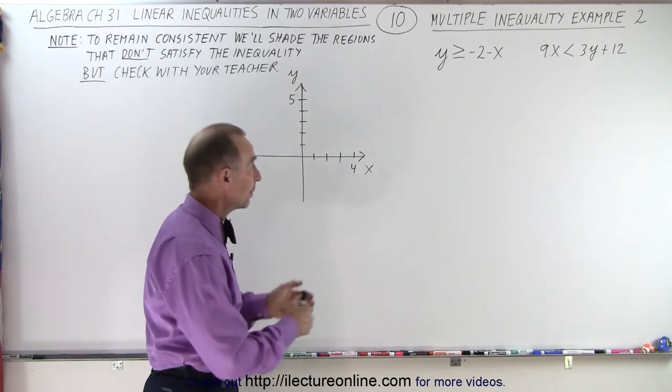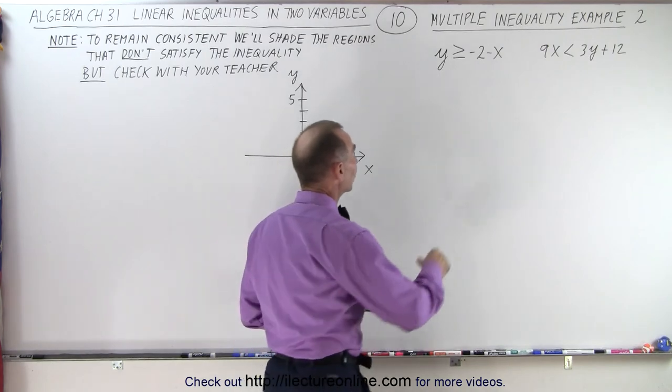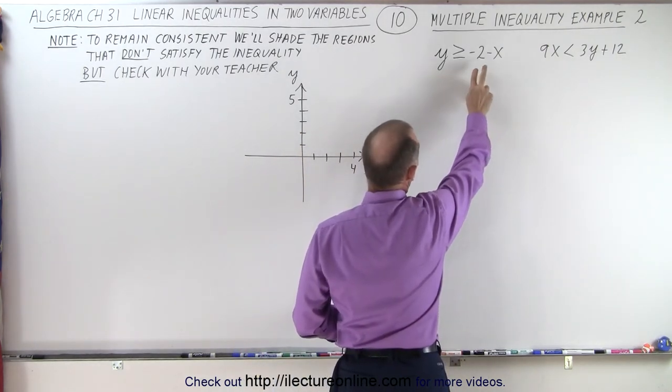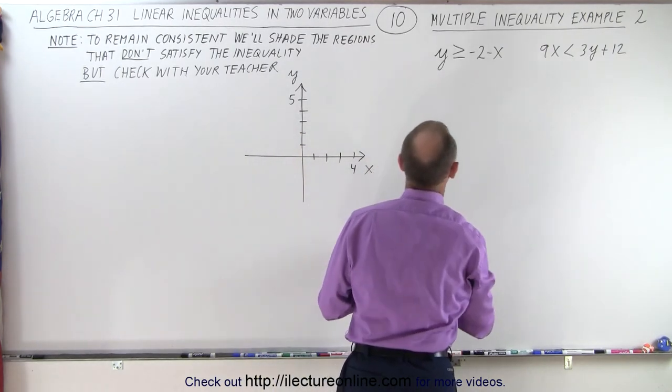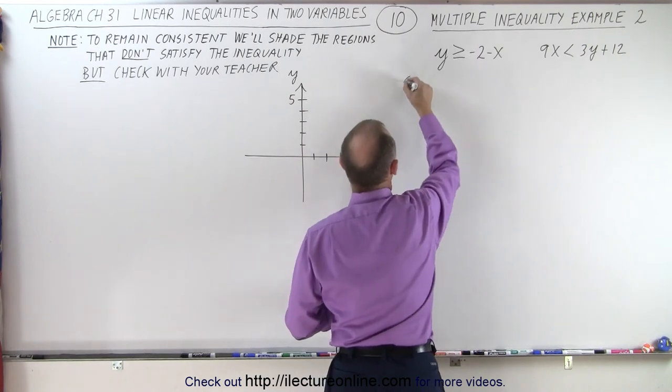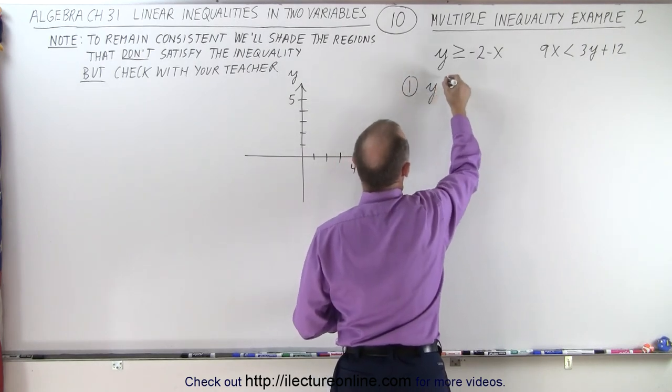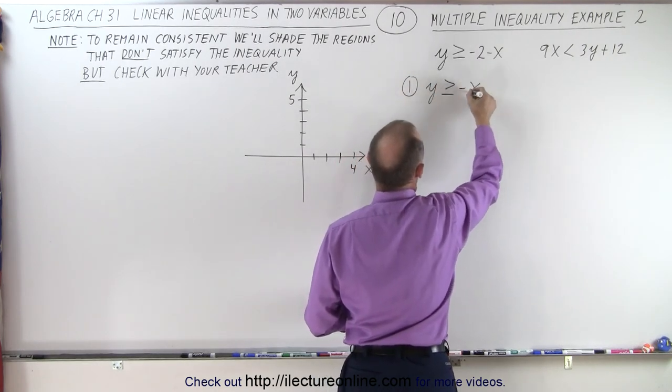We've got two inequalities. Let's first put them into the correct format. This is almost in the correct format; we simply have to switch this around. So inequality number one looks like y is greater than or equal to -x - 2.